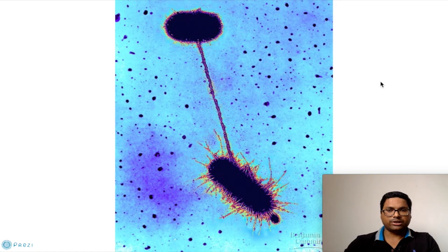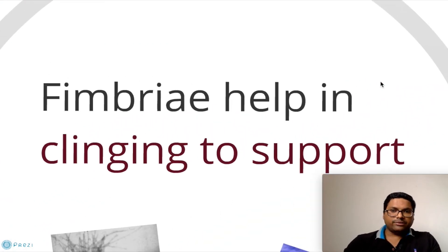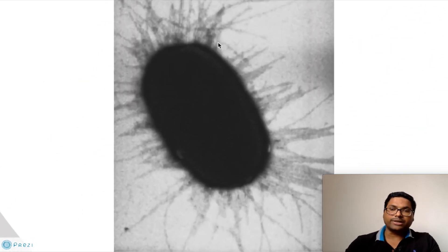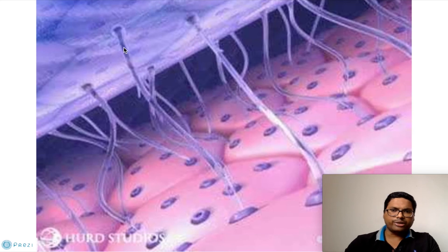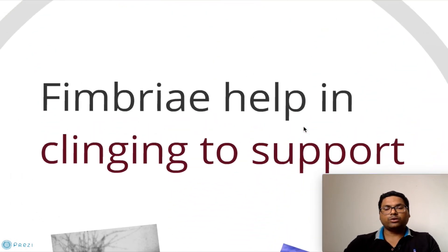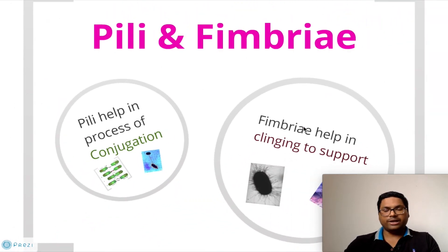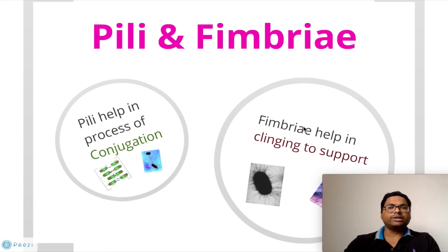Fimbriae help in clinging to a support — they provide an attachment point for the bacteria. You can see fimbriae projecting out over the bacterial membrane, helping the bacteria connect to and hold onto a surface. So pili have a special role in conjugation, while fimbriae function in attachment — allowing bacteria to hold onto a certain membrane or surface.